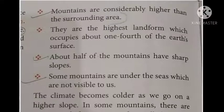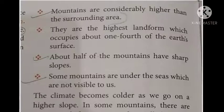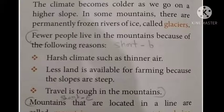The climate becomes colder as we go up a high slope. In some mountains there are permanently frozen rivers of ice called glaciers.